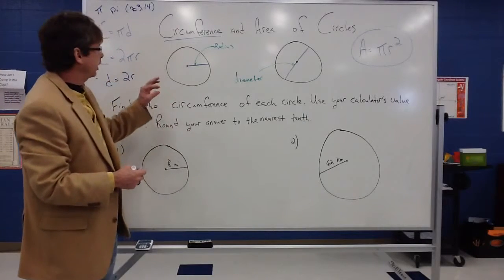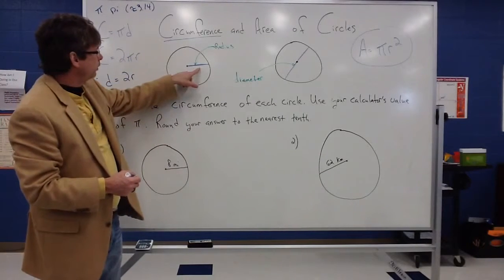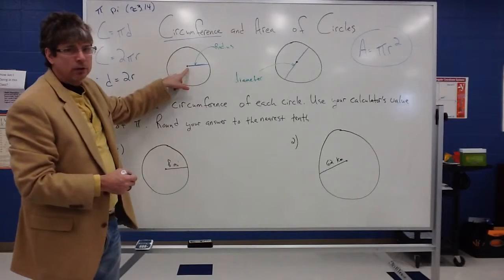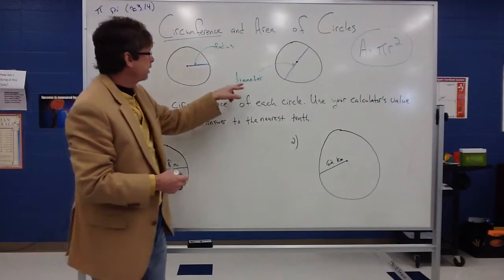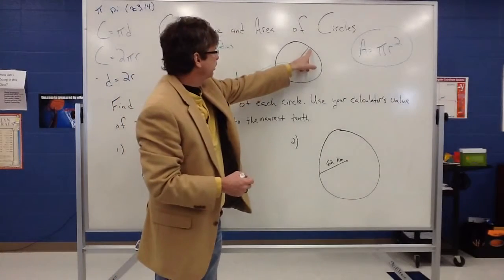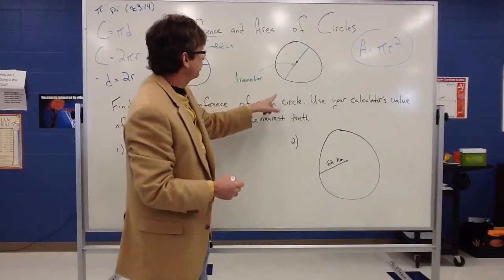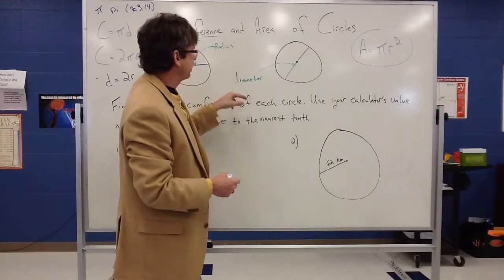Again, as we said, it's vocabulary. The radius of a circle is the segment that goes from the center of the circle to the circle itself. And we said the diameter was the segment that passes through the center of the circle and goes the total distance across the circle. That's the diameter.